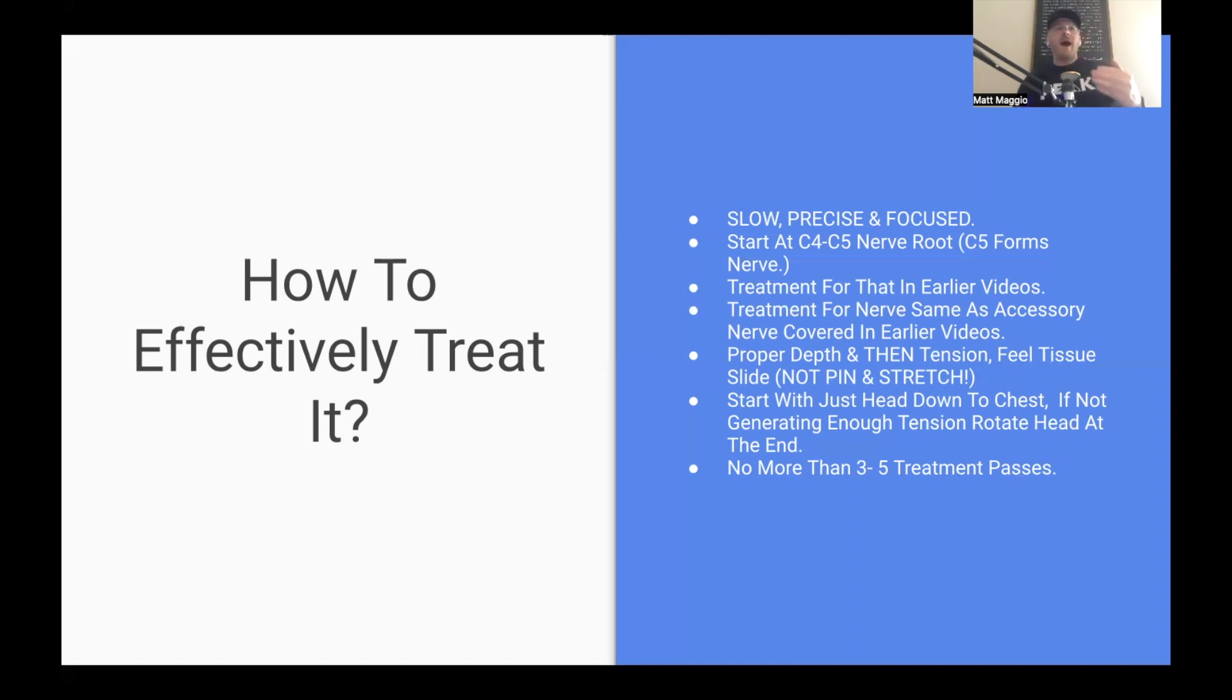The setup and the body mechanics for this is going to be exactly the same as what we did for what's called the accessory nerve. It's just going to be a little bit lower down. So go back and watch that video if you want to see the body mechanics and how to get in there and effectively treat it. Just a couple of things are different. The arm is down and away as opposed to going across the body, but overall the mechanics are very similar. So go back and watch that and you'll get a better idea of how to get there and treat it as well.